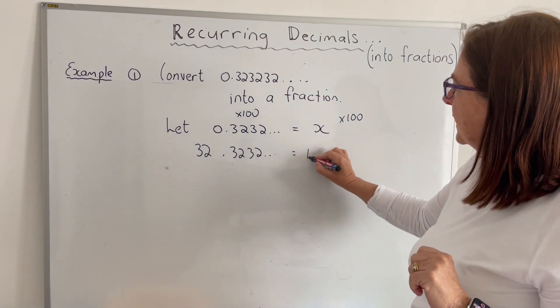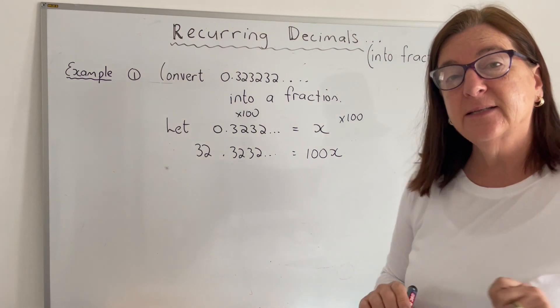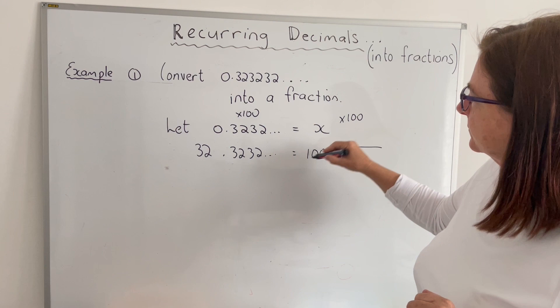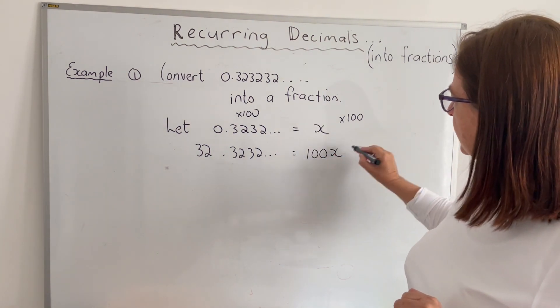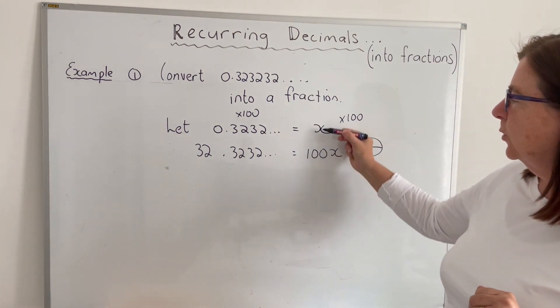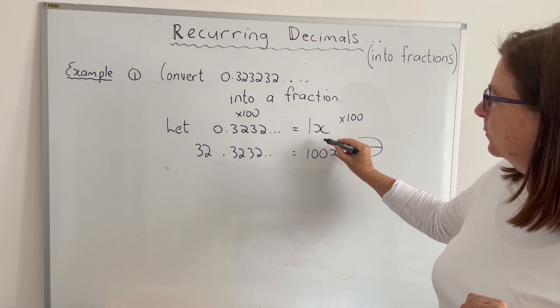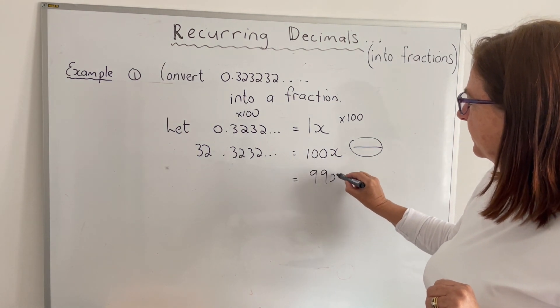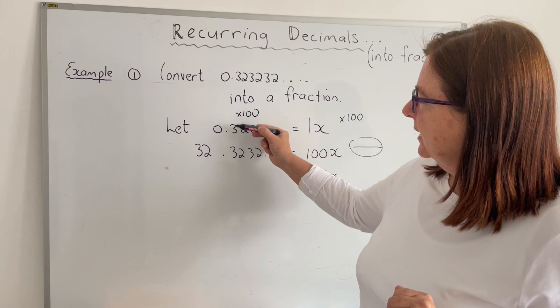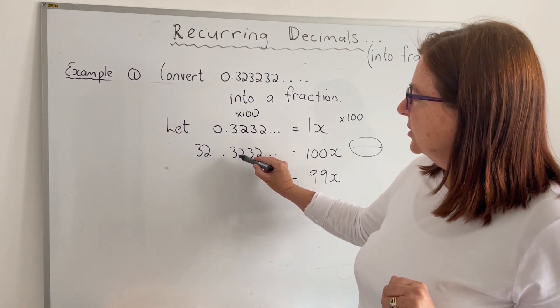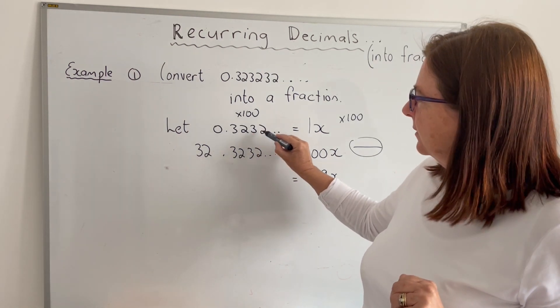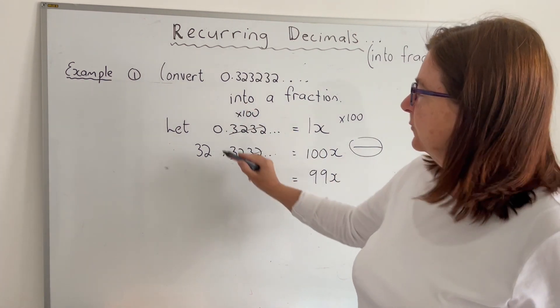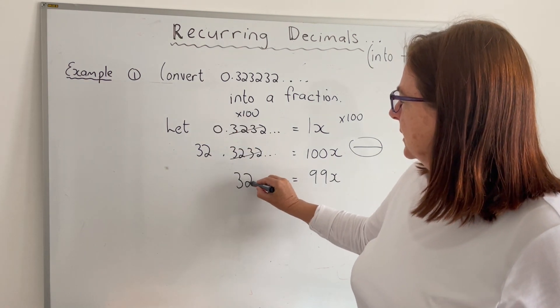The next little trick that we always do is we subtract the two equations. So here I'm going to subtract and I'm going to work upwards. 100x take away, remember there's a one in front, 100x take away 1x is 99x. And on this side here I'm going to subtract as well. When I subtract, the decimals have a look, they're exactly the same. So when I subtract the decimals there, they essentially fall away and I'm left with 32 take away 0, which is 32.